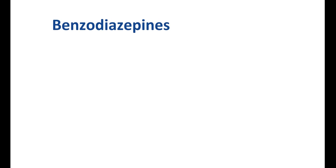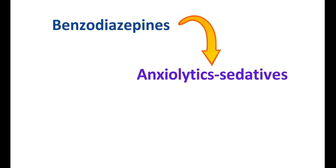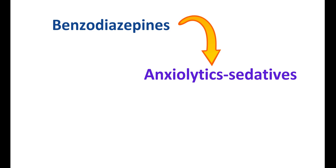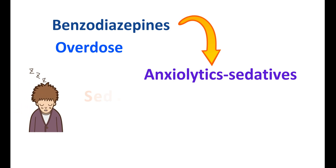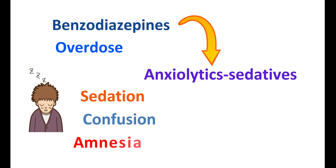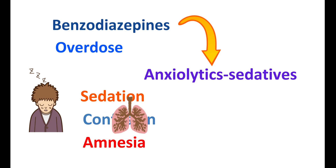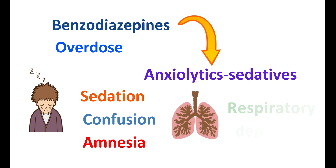Similarly, Benzodiazepines can also be used for other conditions like anxiolytics, sedatives, and hypnotics. They can be used to control anxiety and even induce sedation and sleep in people. However, when they are given at overdose, they can produce very fatal conditions like severe sedation, confusion, amnesia, loss of memory, and even at higher doses, they can also produce respiratory depression.